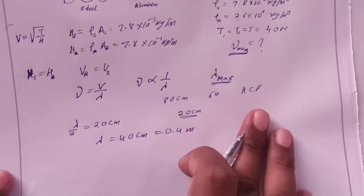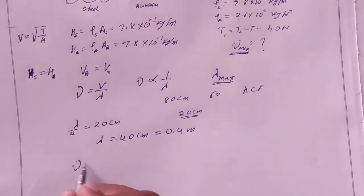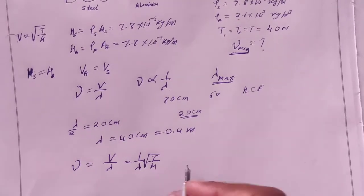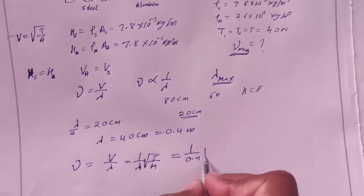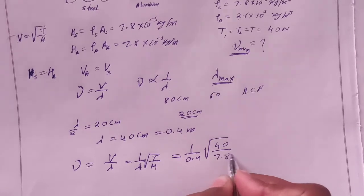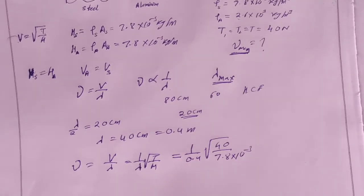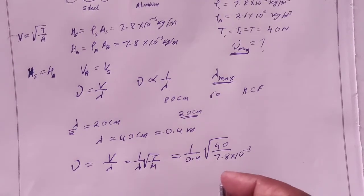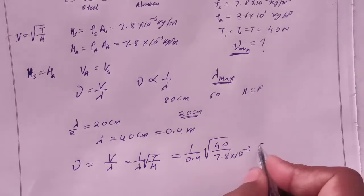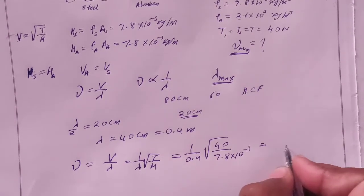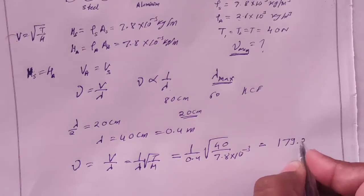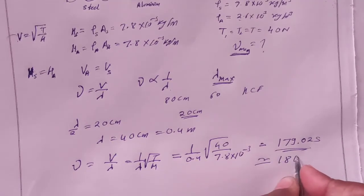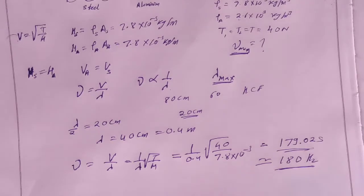So what is minimum frequency? Minimum frequency formula is v by lambda, and v is equal to root T by mu. Putting the values, 1 by 0.4, and T is equal to 40, and mu is equal to 7.8 into 10 minus 3. If we solve this, we get approximately 180. So your frequency is 180 hertz.